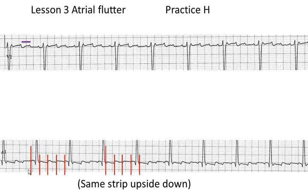If you look at the strip down below, we can start with a flutter wave here, which ends here, the next one ends here, the next one ends here, the next one ends here, the next one would end here, and here, and here. So we try to measure them — we have to remember we're trying to come up with a ratio of how many flutter waves are occurring for each QRS.